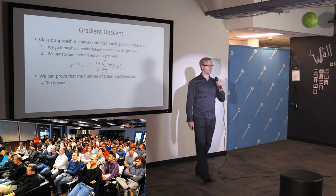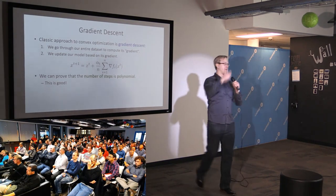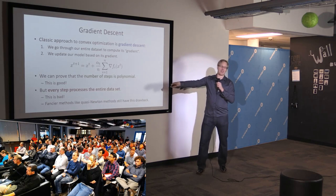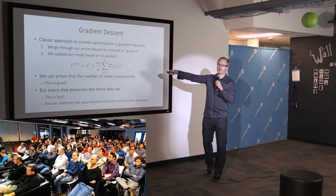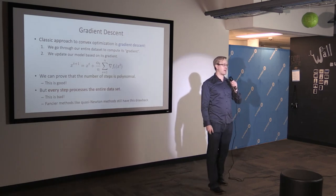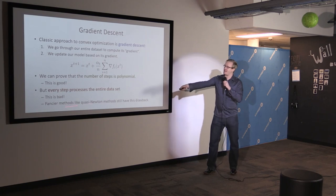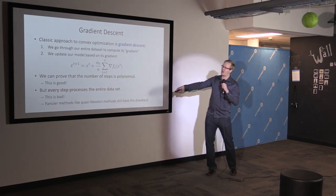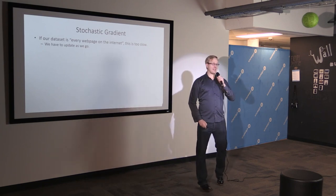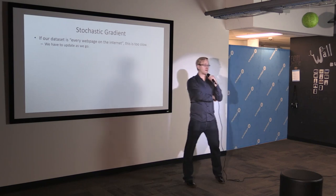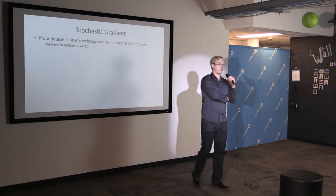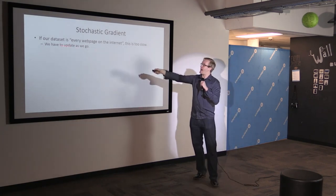The nice thing about gradient descent: you can prove the number of steps is polynomial, which is what computer scientists want. But every step needs to go through the entire dataset — gradient on image one, image two, all the way up to image n. Fancier methods like quasi-Newton methods still go through the entire dataset to compute a gradient. When our dataset is every web page on the internet or every product on Amazon, this is too slow — we're not going to go through the internet 50 times to find a minimizer.